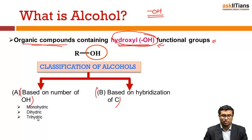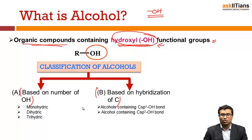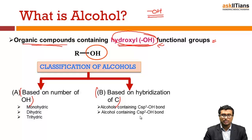Based on the hybridization of carbon, there can be alcohols containing an sp3 carbon–OH bond, and there can be alcohols containing an sp2 carbon–OH bond. Here carbon has sp3 hybridization, and here my carbon has sp2 hybridization. Based on that, I can classify my alcohols.